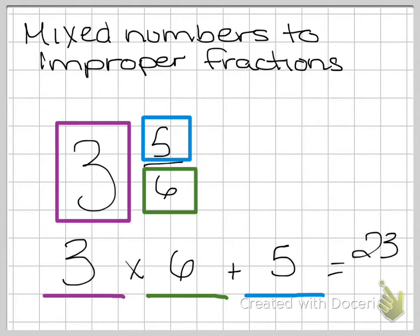So my new numerator is going to be 23, and when we do this process, our denominator does not change, so it's going to be over 6.